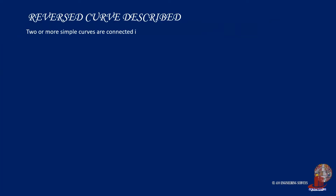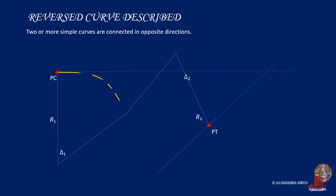A reverse curve is composed of two or more simple curves turning in opposite directions. Two curves are attached to each other and the centers of the curves are on opposite sides of the proposed route of travel. Their points of intersection lie on opposite sides of a common tangent, and the PT of the first curve is coincident with the PC of the second. This point is called the point of reverse curve, or PRC. The point of intersection involves the back tangent of the first curve with the forward tangent of the second curve.